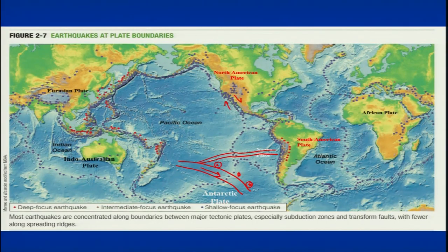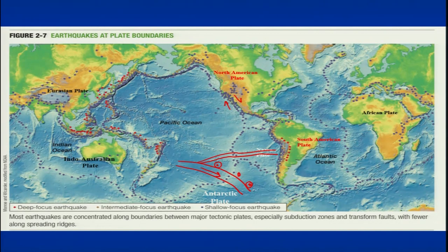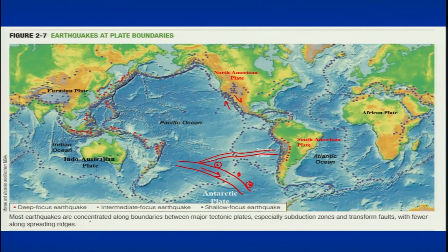Whereas in India, on the northern side, we mostly see shallow earthquakes because we mostly have a collision ongoing between the Indian plate and the Eurasian plate. Understanding the plate boundary is important because it tells us what type of deformation will be seen along these plate boundaries and what type of earthquakes we will experience — deep, intermediate, or shallow.